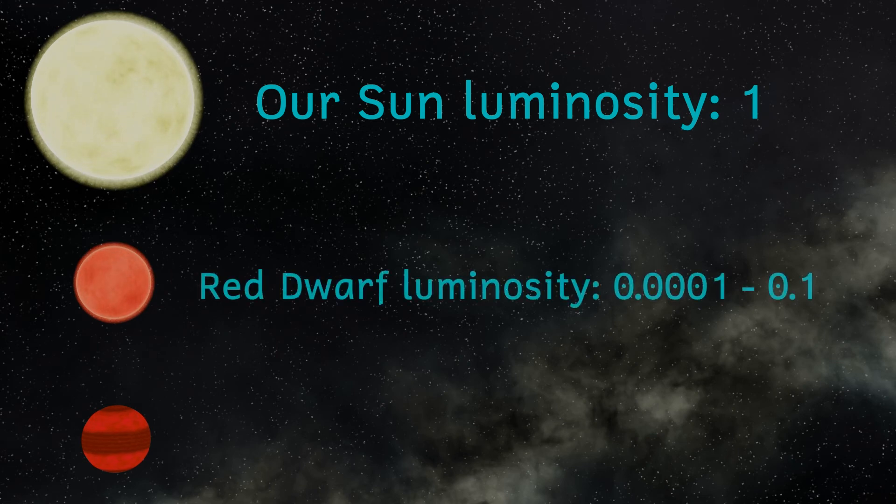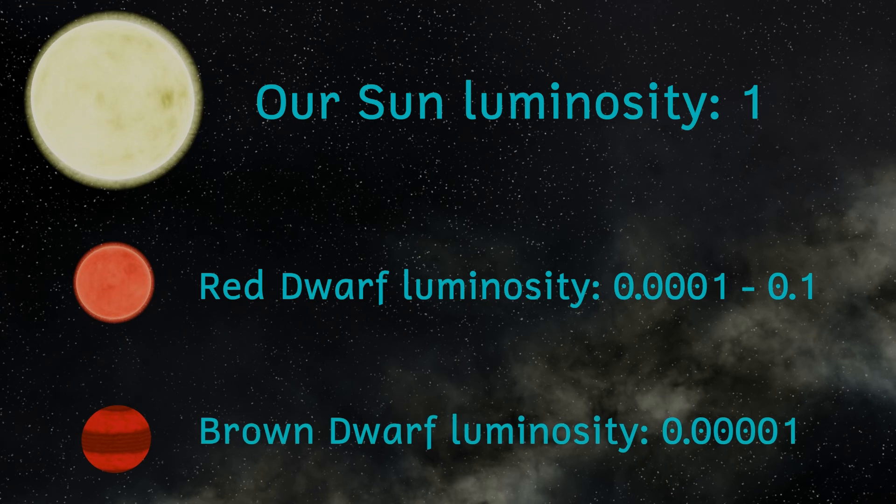Brown dwarfs are stars that are so dim that they're very difficult to spot from here on Earth. This is the reason that this system was only discovered in 2013. So let's take a closer look at the two stars in this system.